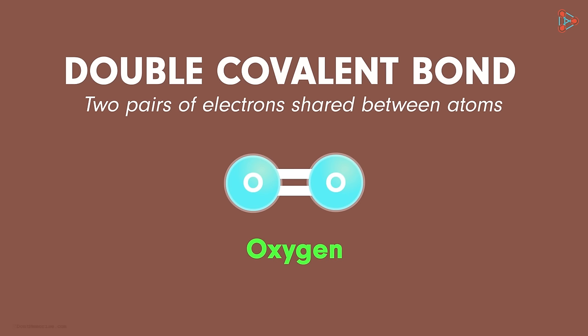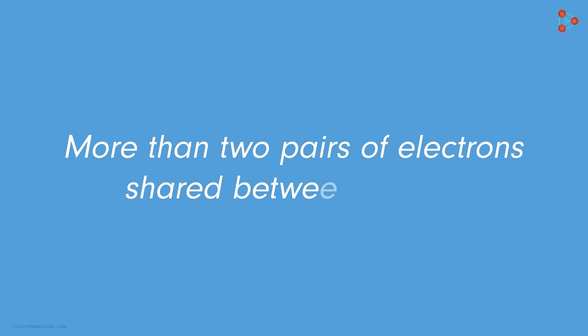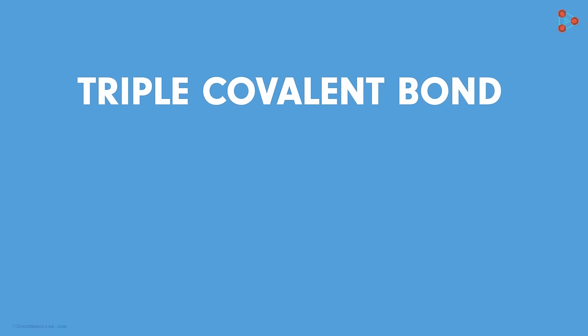Now on the similar lines, can you give me an example where more than two pairs of electrons are shared between the atoms? Wait a second, are we trying to say that a triple covalent bond also exists between the atoms? Absolutely!